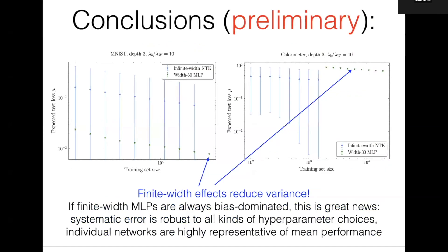The preliminary conclusions: plotting the variance as an error bar on top of the mean, you can barely see the error bars for finite width networks. One effect of having a finite width network away from the infinite width limit is reducing variance. That's great news — it means that your systematic error for problems solved using MLPs should be robust to all kinds of hyperparameter choices. If the relative variance is small, any individual network you train will be well representative of the mean performance. You don't need to train a thousand networks to convince yourself you're always landing on the same answer.